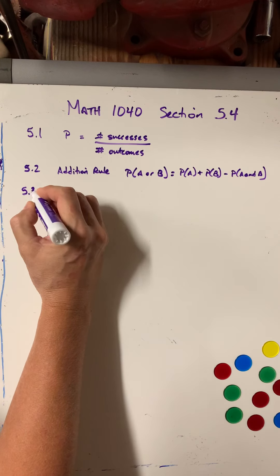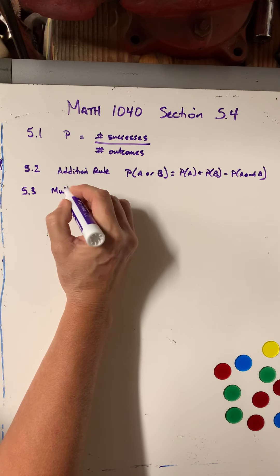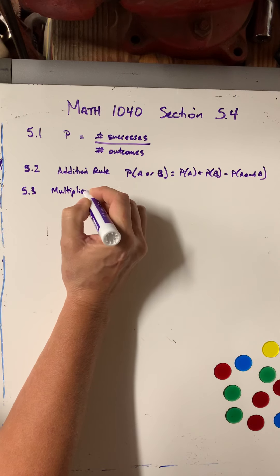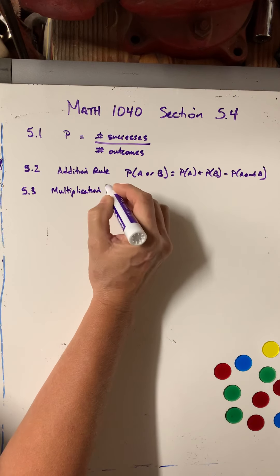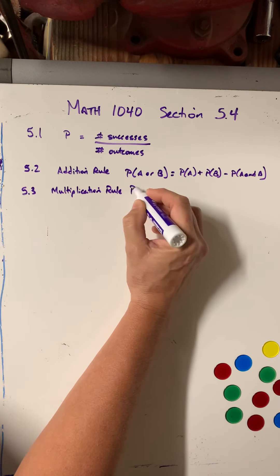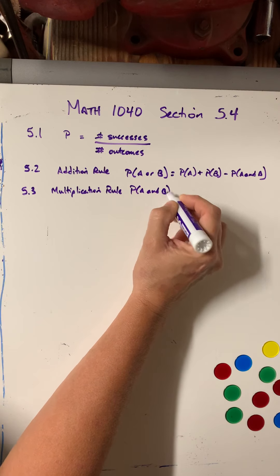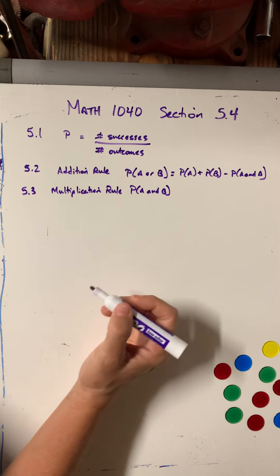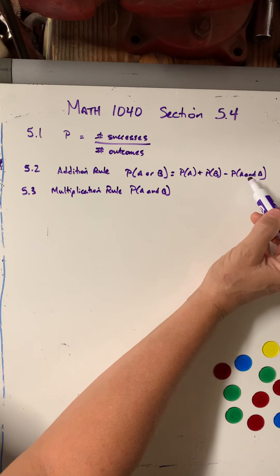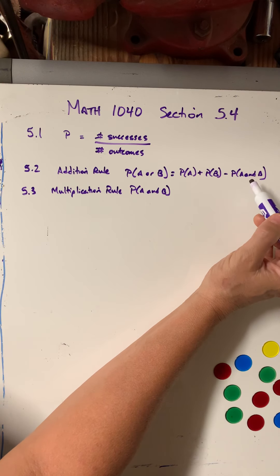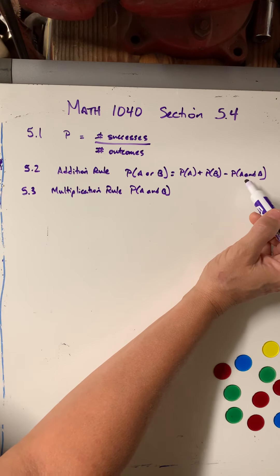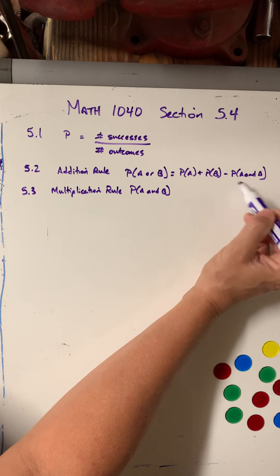Then we move to 5.3, which was the multiplication rule, which was a little bit confusing because it was the probability of A and B, which we saw in 5.2. But again, this was for a single event. So what's the probability that a single person has dark hair and blue eyes? Then that's one person.